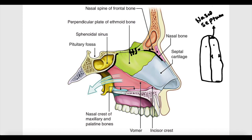In summary, the roof of each half of the nasal cavity is formed of three parts: anteriorly by the nasal bones and frontal bones; in the middle by the cribriform plate of the ethmoid bone; and posteriorly by the downward sloping of the sphenoid bone.